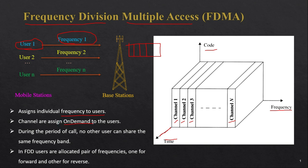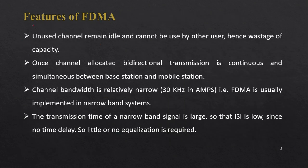Channels are assigned on demand to users, meaning the channel is allocated only when the user is on a call. During the period of the call, no other user can share the same frequency band. In FDD, users are allocated a pair of frequencies — one for the forward channel and another for the reverse channel.